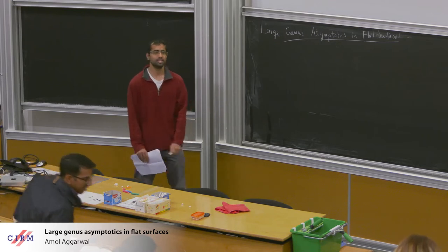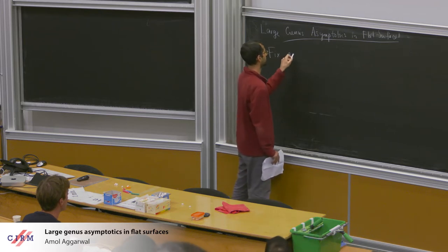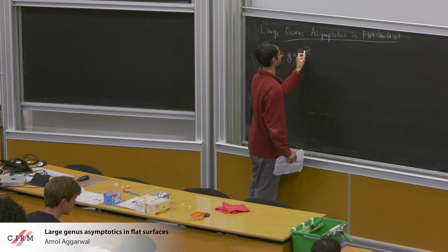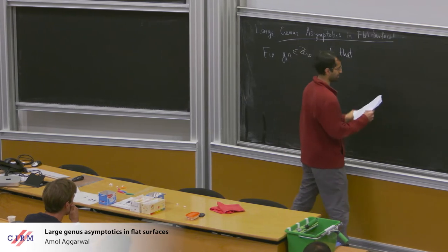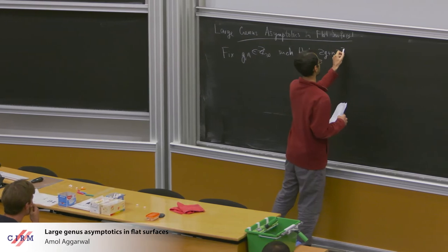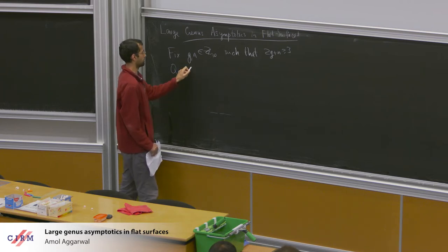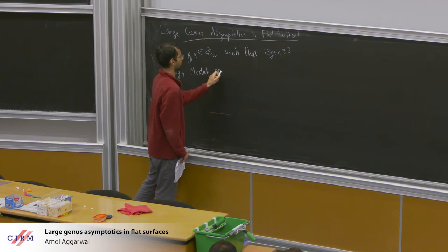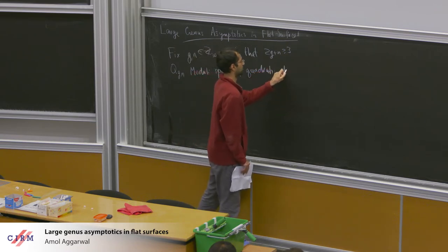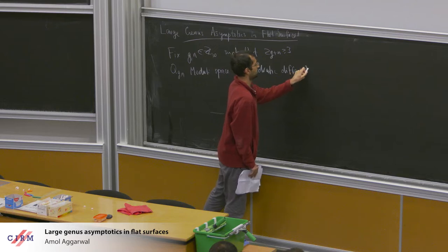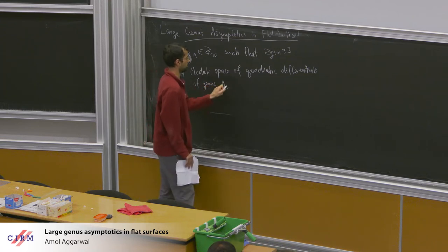I'm going to be talking about large genus asymptotics in flat surfaces. So let's fix some g, which will eventually be a genus, and n, which will both be integers. We'll let Q_{g,n} denote the moduli space of quadratic differentials of genus g with n simple poles.